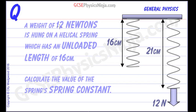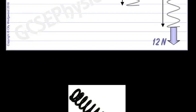A weight of 12 newtons is hung on a helical spring which has an unloaded length of 16 cm. Now a helical spring is just your standard spring which is coiled like that. That's a helical, like a helix.